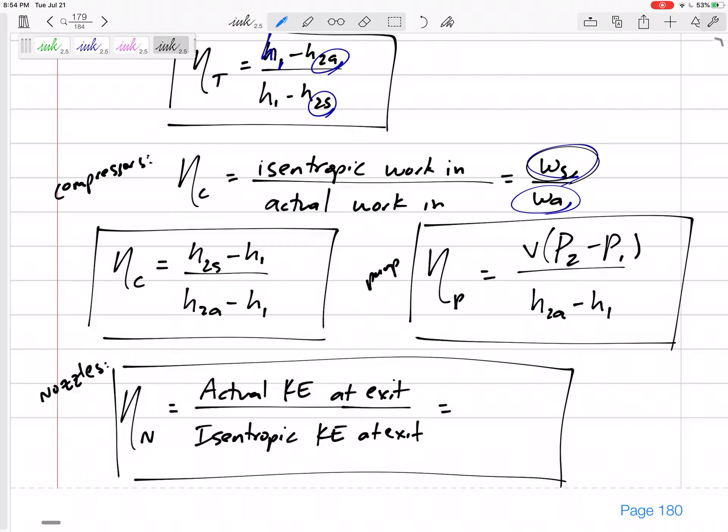The last steady flow device we'll look at is nozzles. Nozzles speed up the flow, so if it was really good, then it would speed it up really well. This is not just V2S, but V2S squared—that's the velocity at the exit. We say kinetic energy, but instead of one-half MV squared on top and bottom, the one-halves cancel out, the M's cancel out. So it's V2 actual squared over V2 isentropic squared. If velocity initial is close to zero, then this is H1 minus H2 actual over H1 minus H2S, just like the turbine.